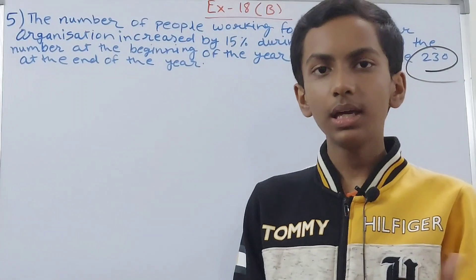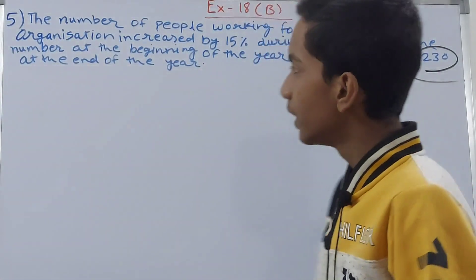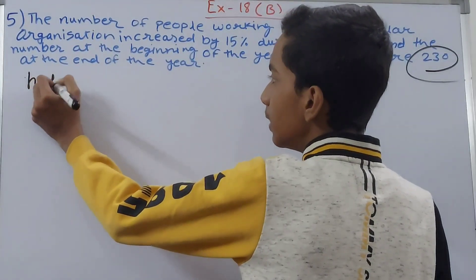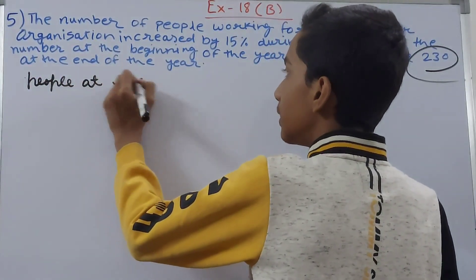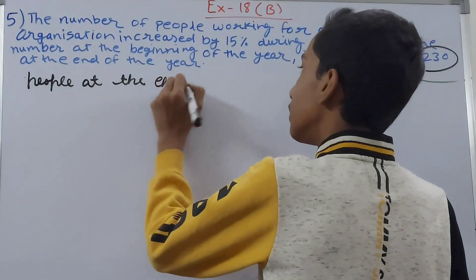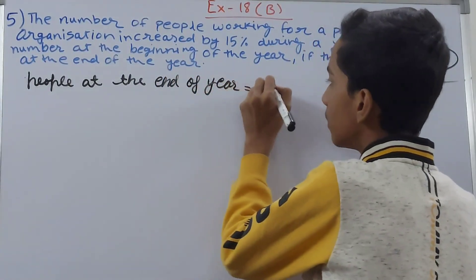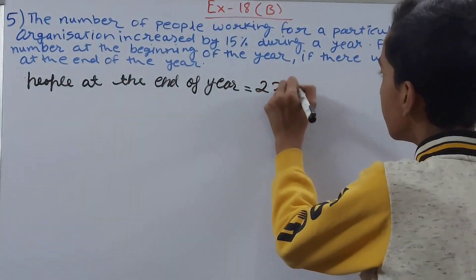So to find the original value, we will decrease 15 percent rather than increasing 15 percent. You can write here that people at the end of the year - there were how many people at the end of the year? 230.